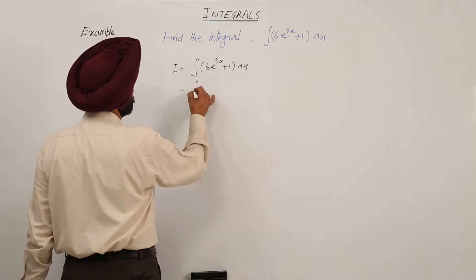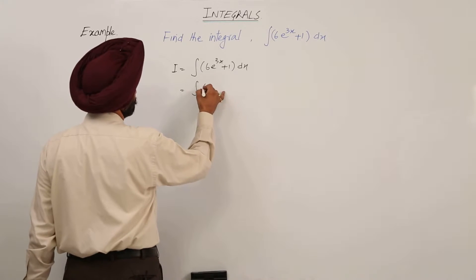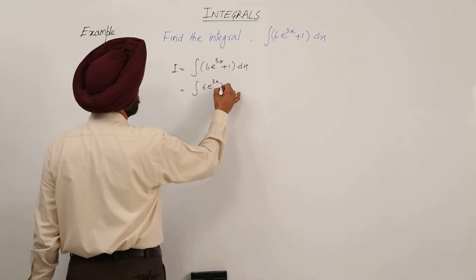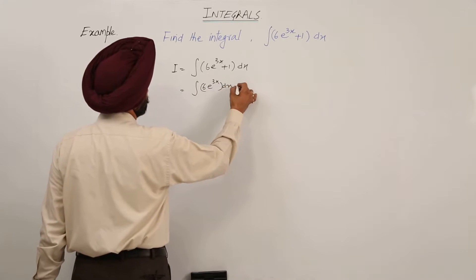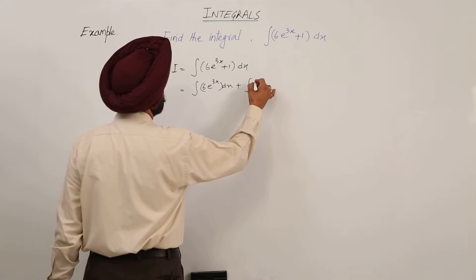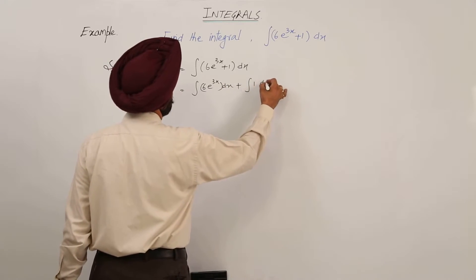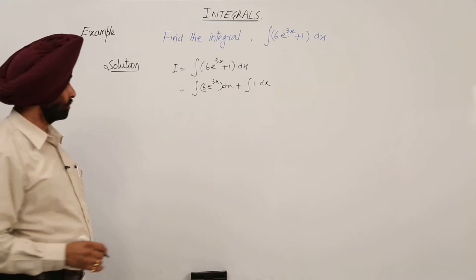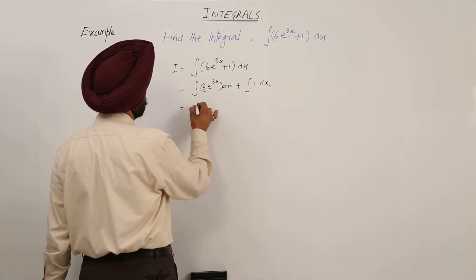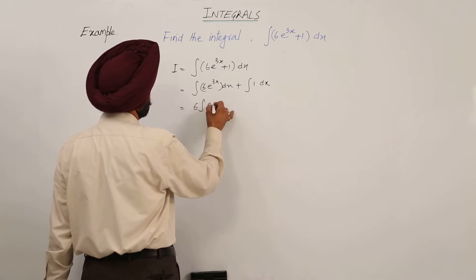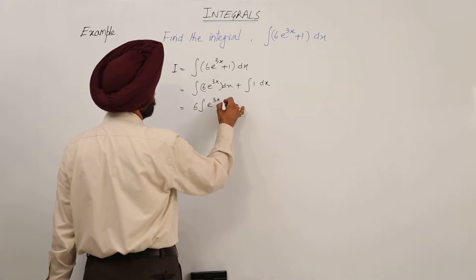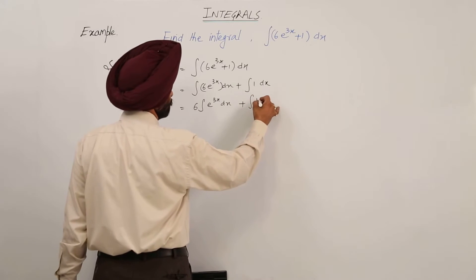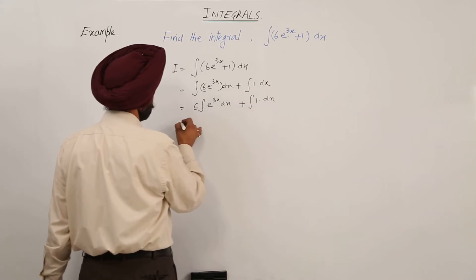Now, this we can write as: integration of 6e raised to power 3x dx, plus integration of 1 dx. Or this can be written as: 6 times the integration of e raised to power 3x dx, plus integration of 1 dx.